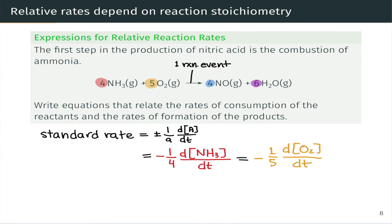For O2, analogous idea. It's a reactant, so we have a negative sign out front, one divided by five, its stoichiometric coefficient, dO2 dt.